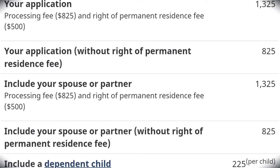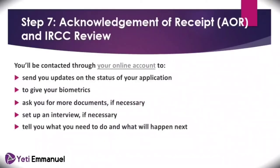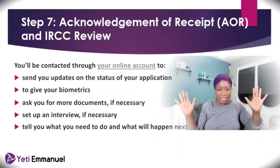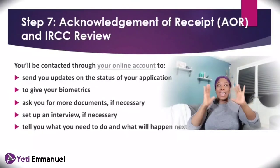After you submit your application, if anything changes — you get married, have another child, or something else happens — there's a web form you can fill to update your application. If you don't update it, for example if you just had a baby, you might not be able to bring that child. So update your application whenever necessary. Once everything is uploaded, payments made, and changes applied, IRCC will send you an Acknowledgement of Receipt, commonly called AOR.